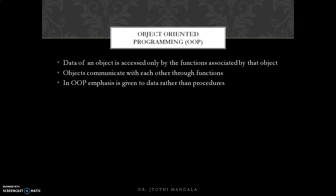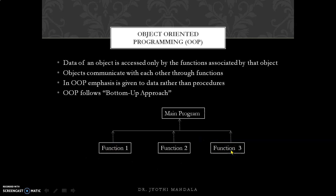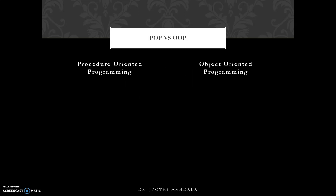OOP follows the bottom-up approach: we first design our objects (each containing its own functions and data), and then move up to the main function. Examples of Object-Oriented Programming Languages include Java, VB.NET, and C#.